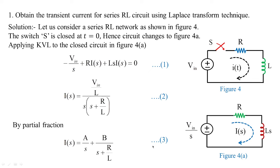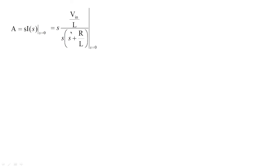From partial fractions, we find A by multiplying I(s) by s and substituting s=0. Since I(s) = (V_in/L)/[s·(s + R/L)], multiplying by s cancels it out, and substituting s=0 gives A = (V_in/L)/(R/L) = V_in/R (equation 4).